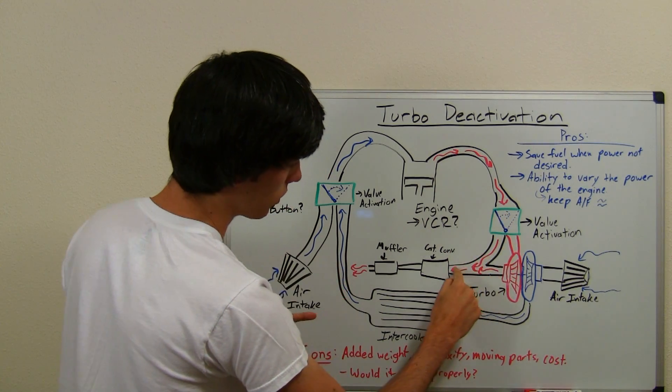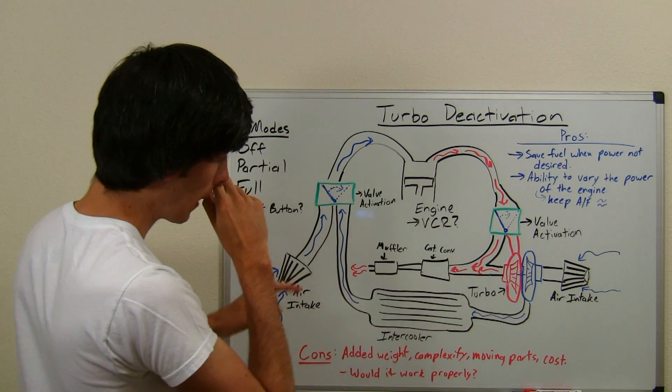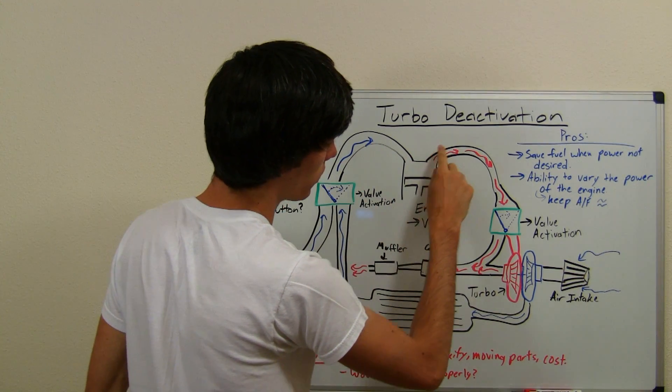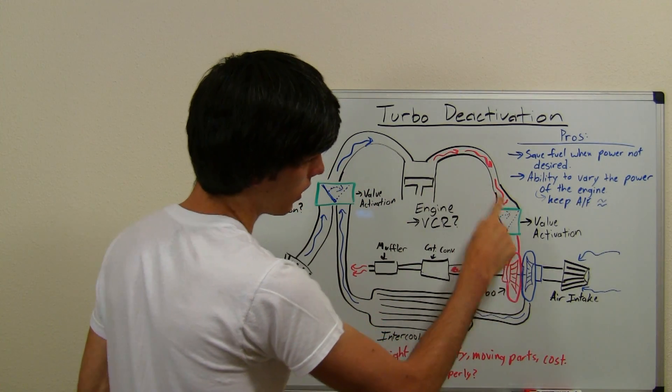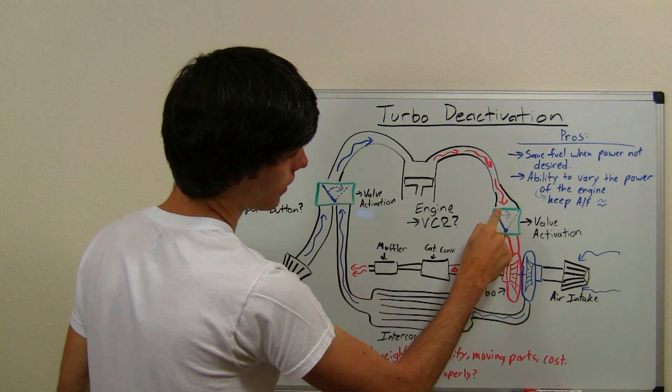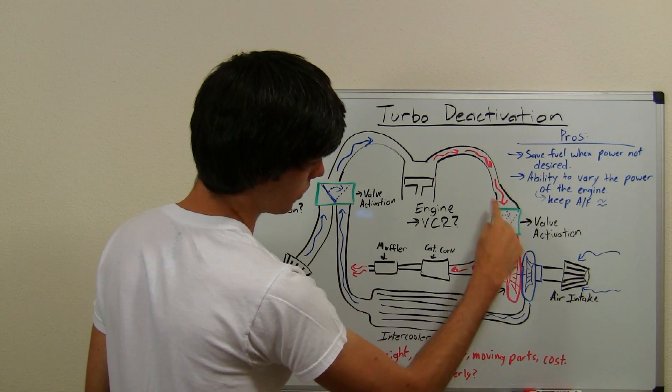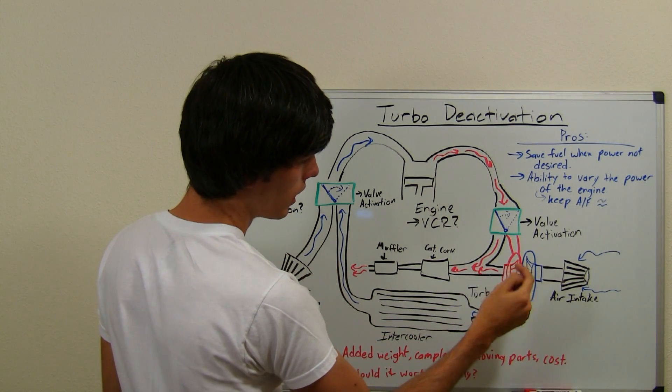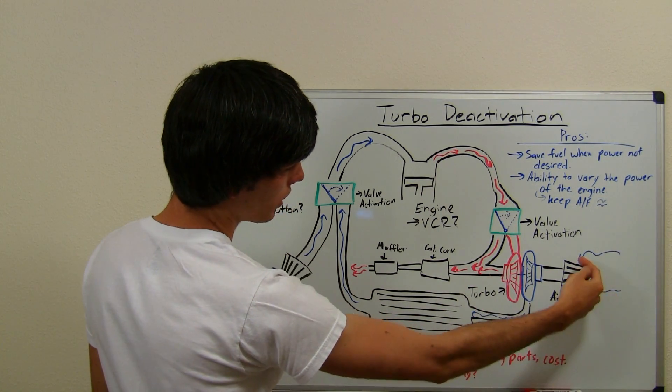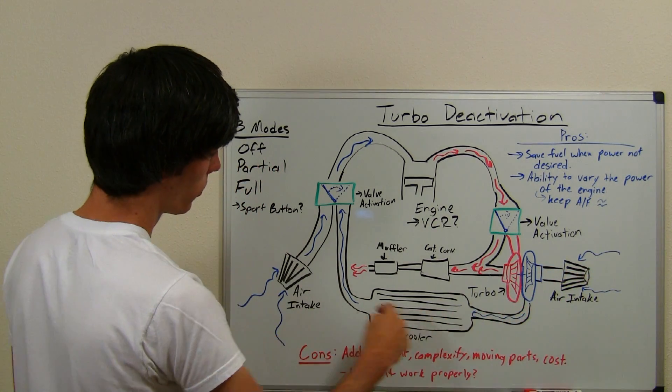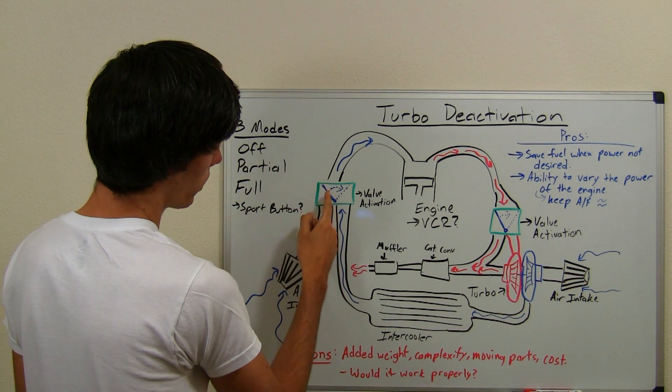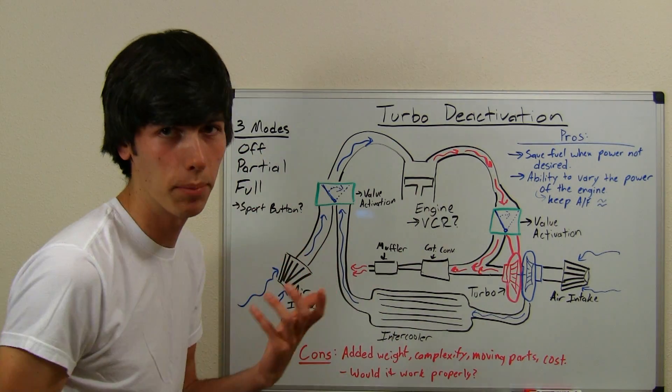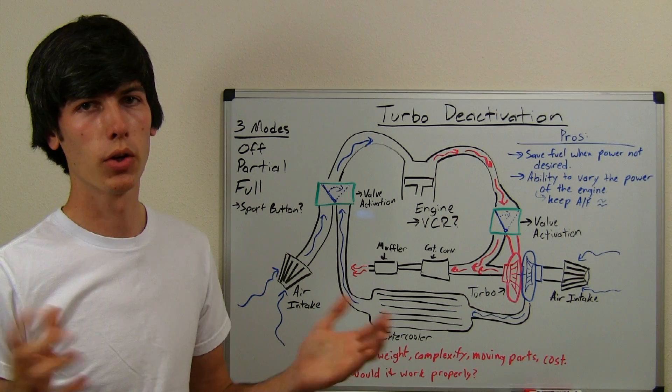It also closes off this exhaust path. So as your engine is revving and you're creating power, it's going to send your exhaust through here. It's going to get to this valve and it's not going to be able to pass straight out through the exhaust. Instead it's going to have to go through the turbocharger. So it goes in the turbocharger, spools up the turbine, pulls in air through the air intake, that goes through the intercooler, passes through this valve which is open to allow this air to go in, and then goes into your engine. You have boost and you create more power.